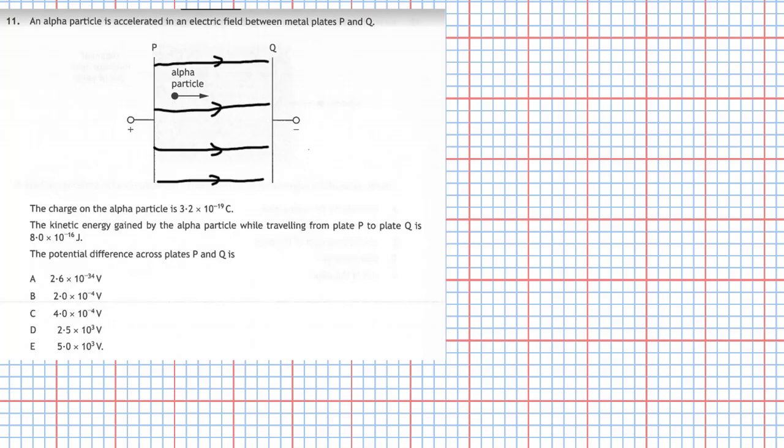Now you look up your data sheet and we find out that the work done on a charged particle passing through potential difference V is Q, the size of its charge, times the potential difference V. We can rearrange that and we can say that W, the work done on it, divided by Q is equal to V, the potential difference.